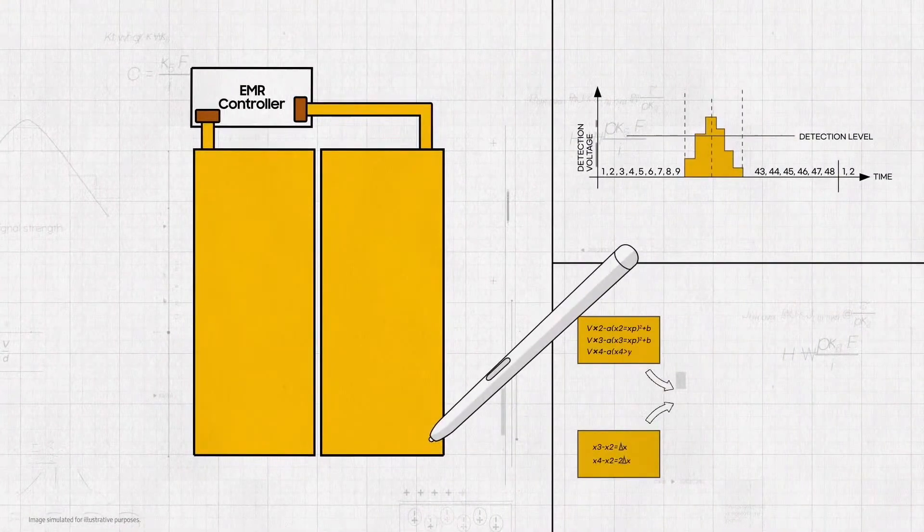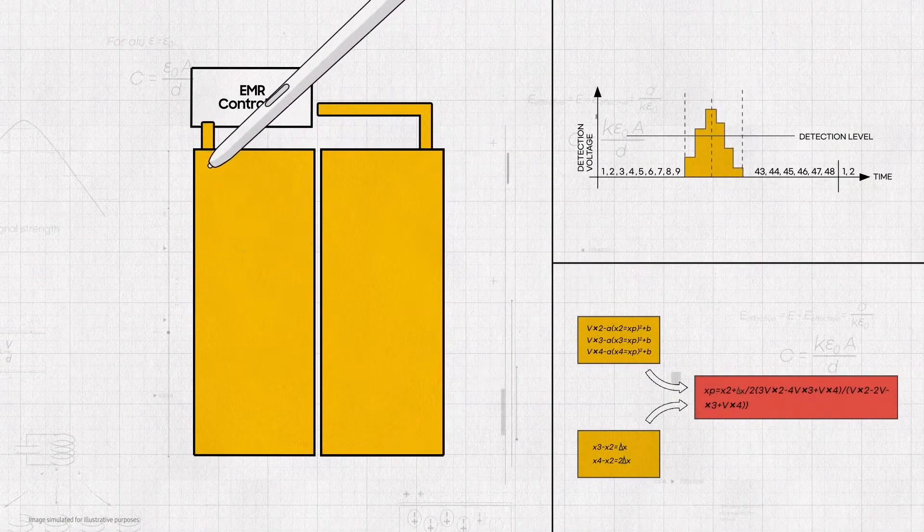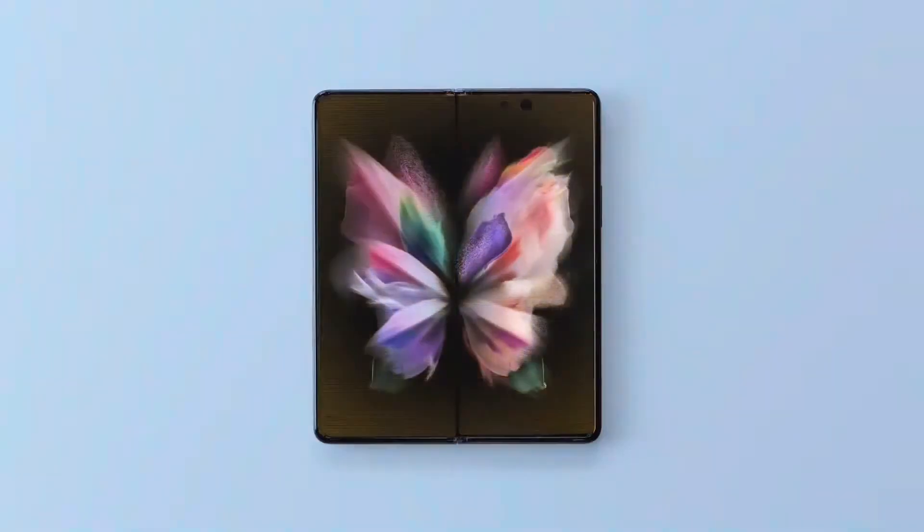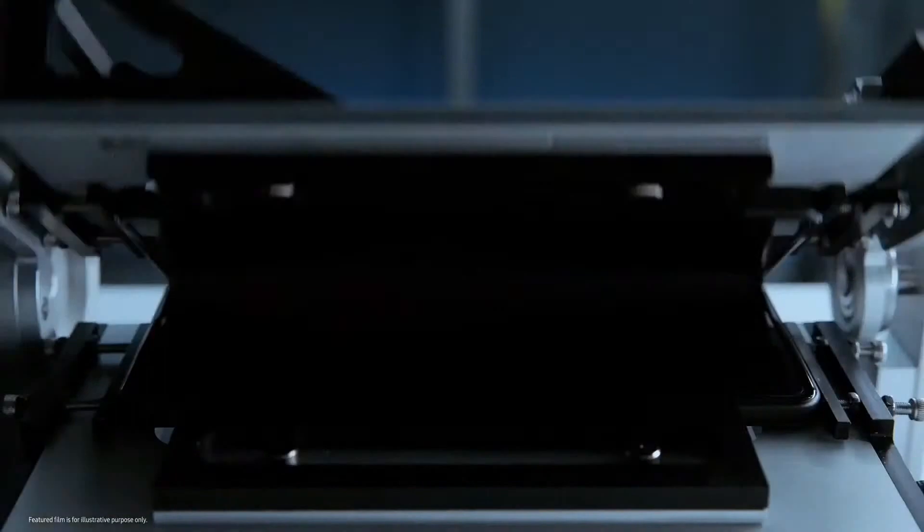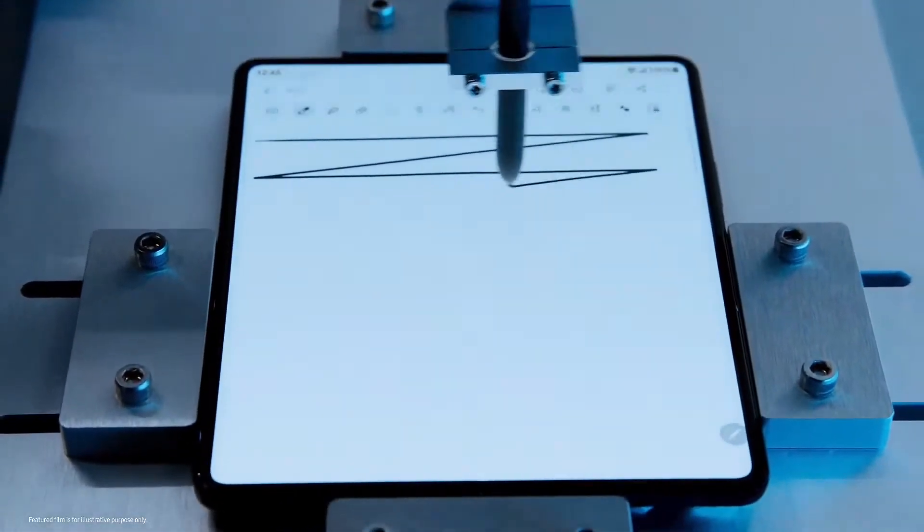To support this new form, a new algorithm was created to calculate signals from both digitizers, so they could recognize coordinates in the folding area while minimizing errors. Through meticulous craftsmanship and research, we were able to create the first ever digitizer for a foldable display, compatible with an S-Pen.